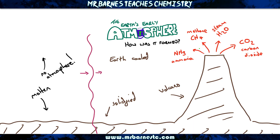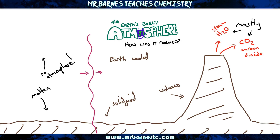There also were traces of nitrogen, but the two main ones you need to remember are carbon dioxide, CO2, and steam, which is H2O with the little G symbol to show that it's a gas. The other important thing to note: there was no oxygen in the Earth's early atmosphere.